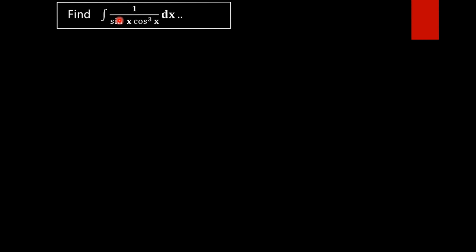In order to make this function into an integrable form, we can see that we have sin x · cos³x. The problem is with cos³x here — if we get cos in even power, that is as cos⁴ or cos², then we can make this function into an easily integrable form.